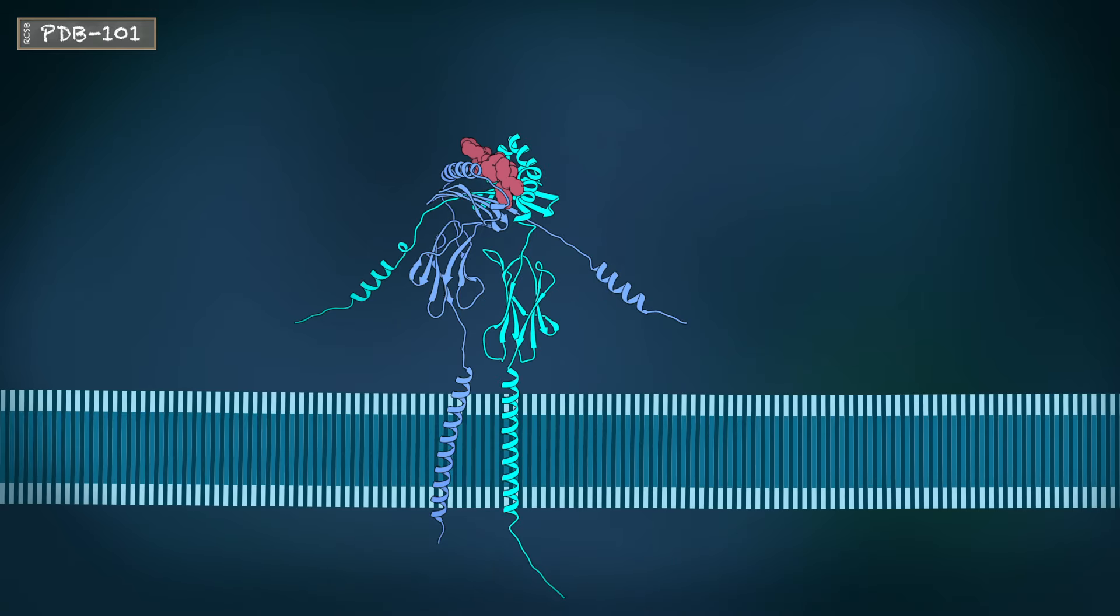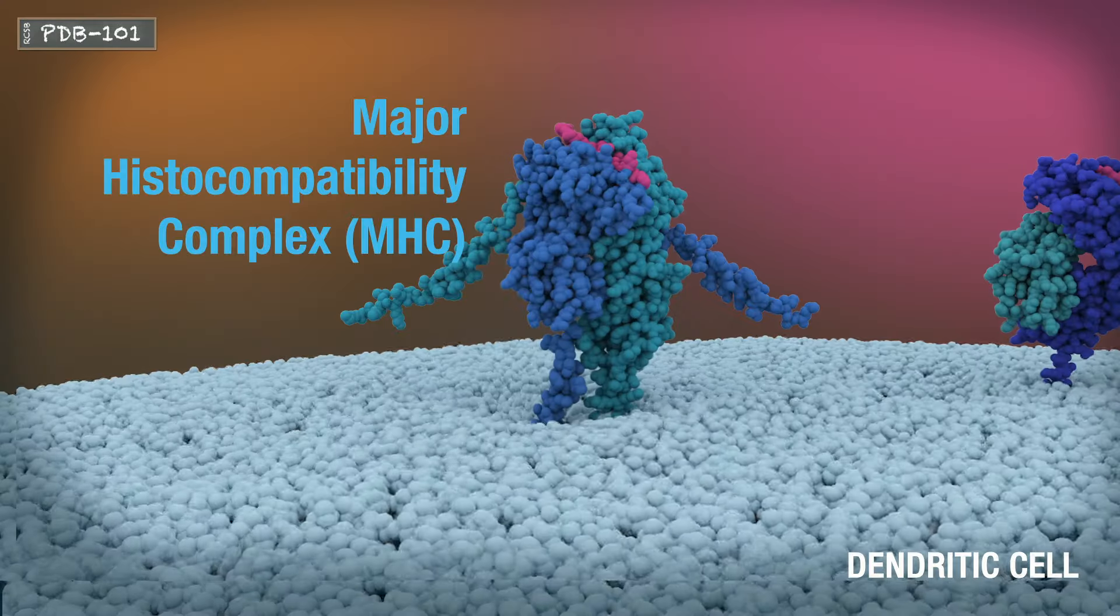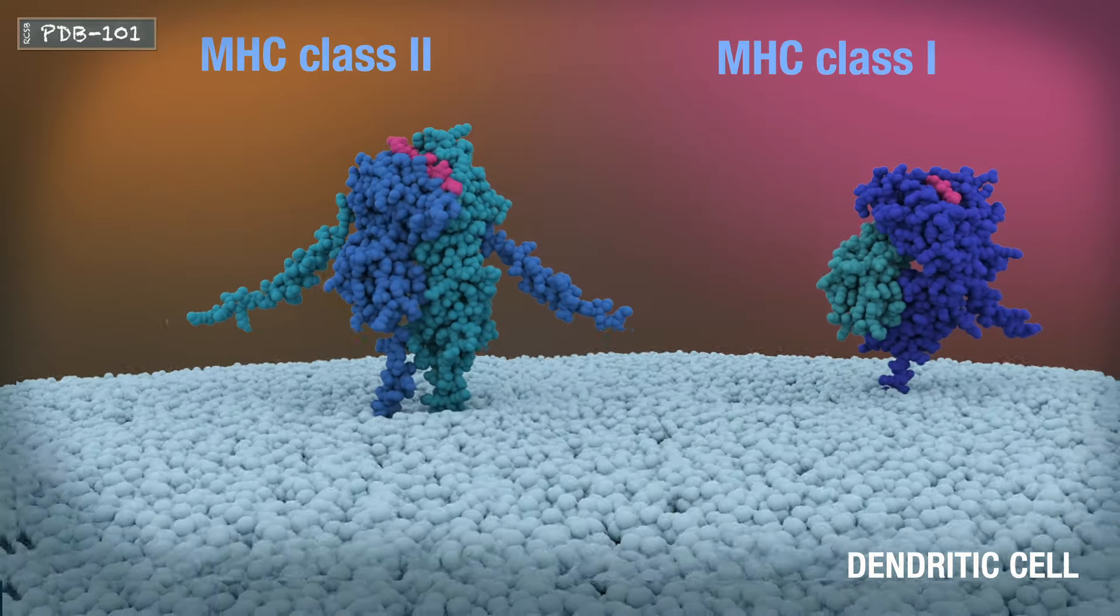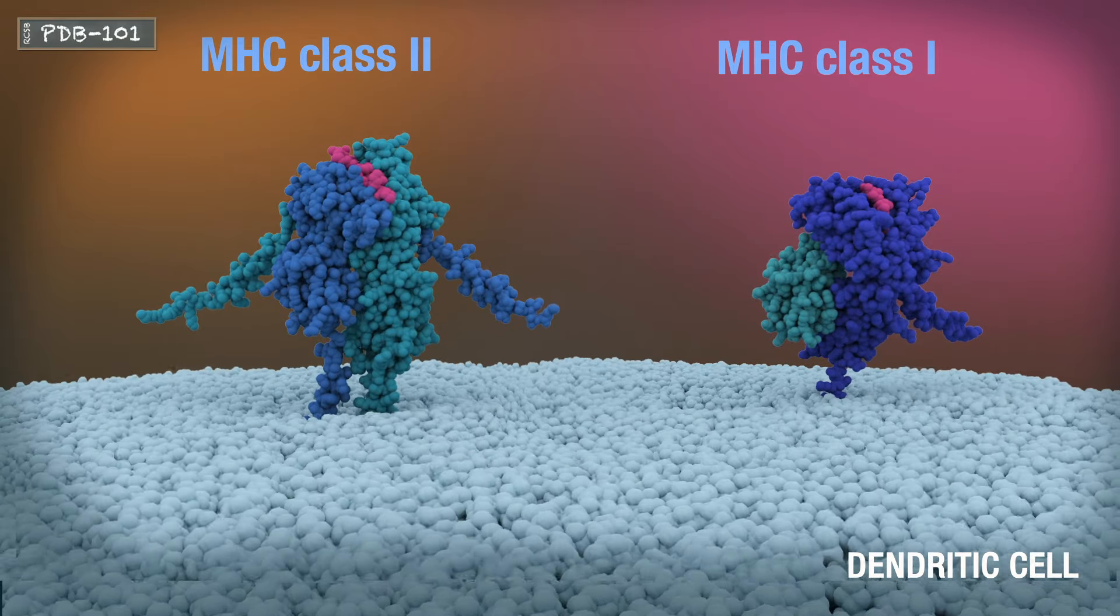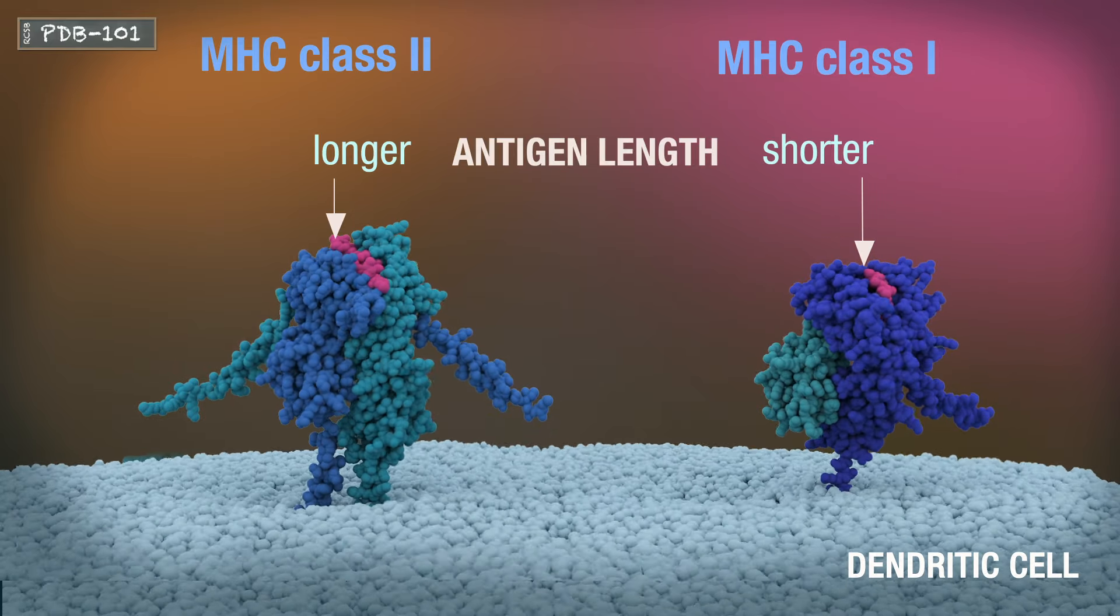Then the dendritic cell loads these antigens and neoantigens into histocompatibility complexes found on the cell's surface. Histocompatibility complexes come in two types, MHC1 and MHC2. MHC2 generally presents longer peptides than MHC1.